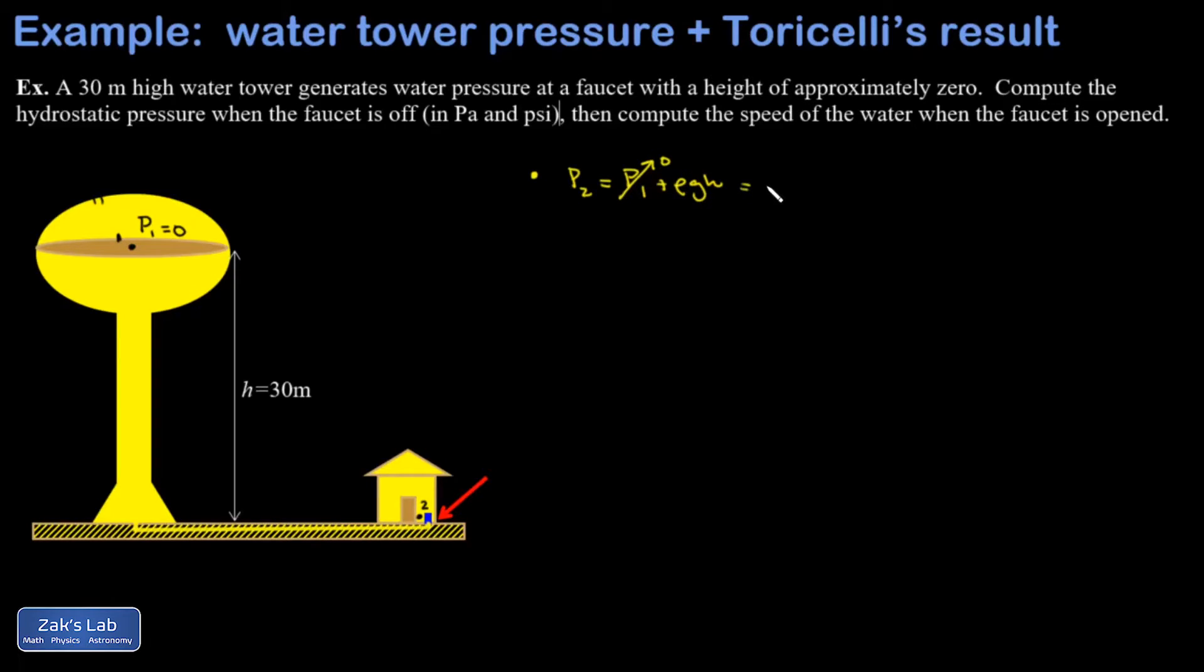And I find that P2 is just ρgh, where ρ there is the density of water, which you may recall is 1,000 kilograms per cubic meter. And I'm going to come out with my water pressure in pascals. Pascals are very small. So this comes out to 294,000 pascals.